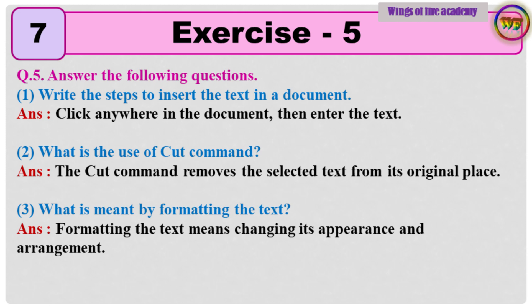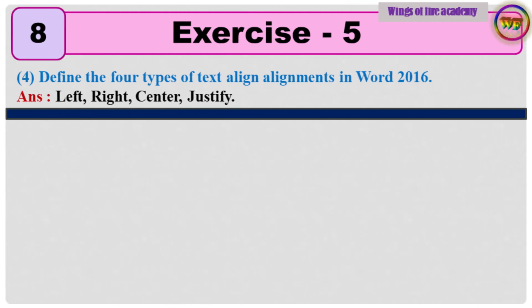3: What is meant by formatting the text? Answer: Formatting the text means changing its appearance and arrangement. 4: Define the four types of text alignments in Word 2016. Answer: Left, Right, Center, Justify.